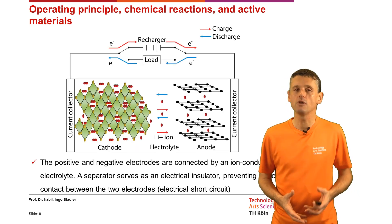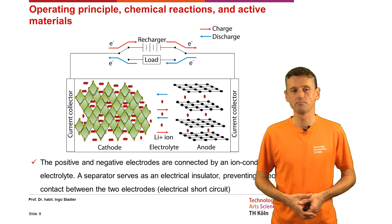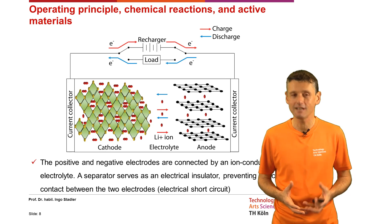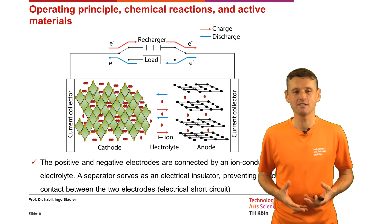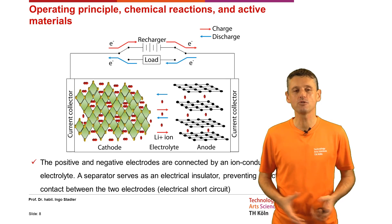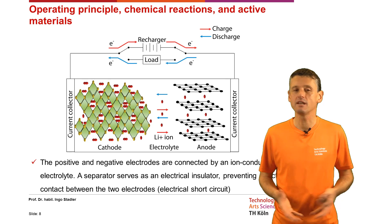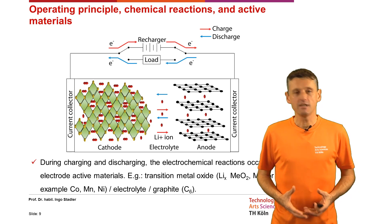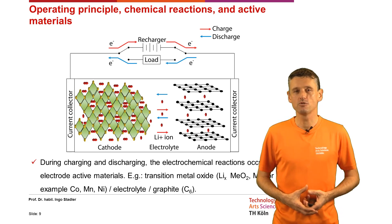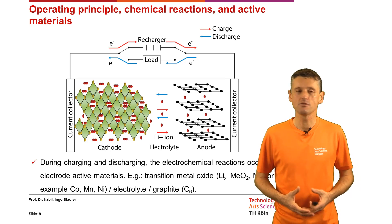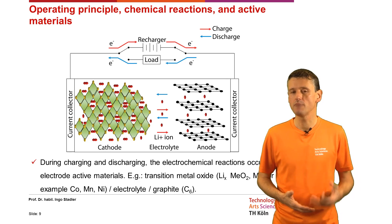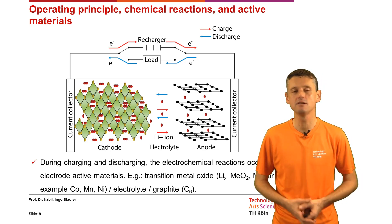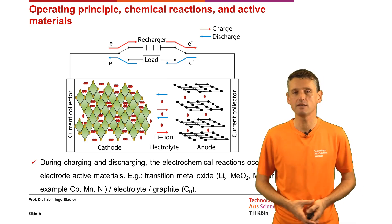Here we see the operating principle of a Lithium ion cell. The positive and negative electrodes are connected by an ion-conducting electrolyte. A separator serves as an electrical insulator, preventing direct contact between the two electrodes to prevent an electrical short circuit. During charging and discharging, the electrochemical reactions occur at the electrode materials — for example, the transition metal oxide (Lithium metal oxide, where Me stands for Cobalt, Manganese, or Nickel), the electrolyte, and the graphite (C₆).